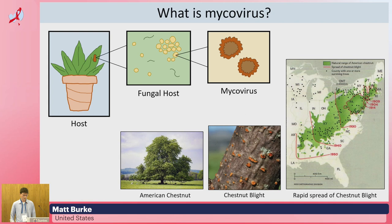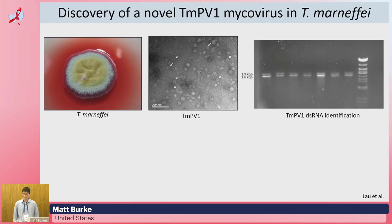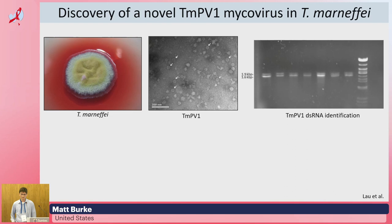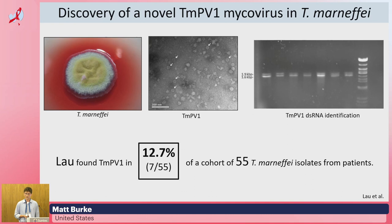Recently, a novel double-stranded RNA mycovirus called TMPV-1 has been discovered in Talaromyces by the Lao group in Hong Kong. This is the first report of a mycovirus infecting a thermally dimorphic fungus. The double-stranded RNA extraction showing the presence of TMPV-1 in TM is one of the identification methods, and the other is reverse transcription PCR. Lao screened their cohort of 55 TM isolates and found a prevalence of 12.7% of TMPV-1 mycovirus.